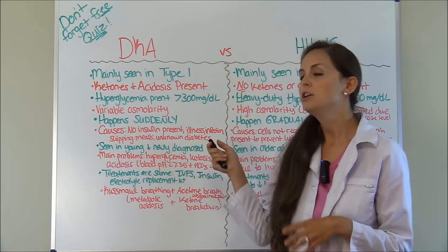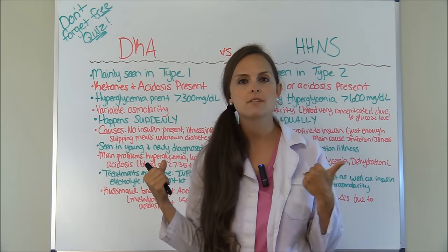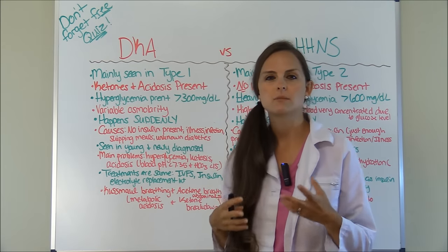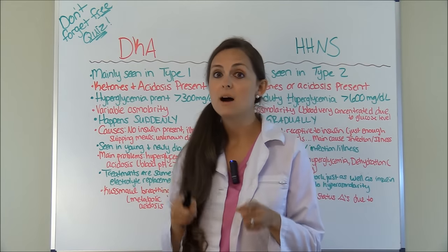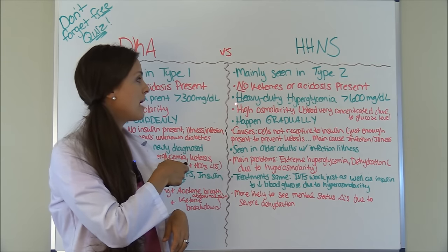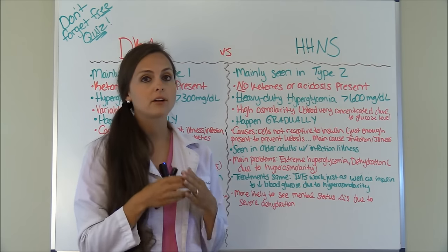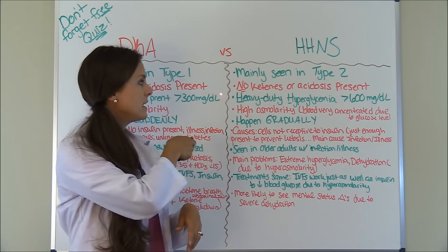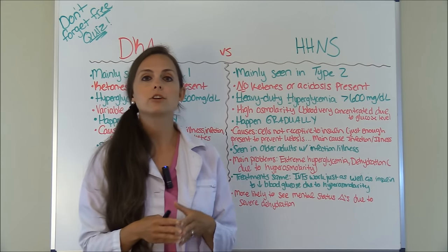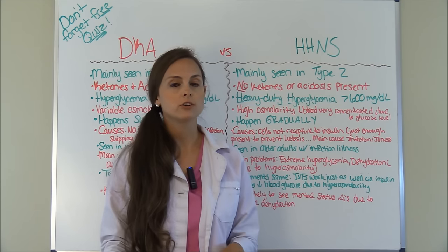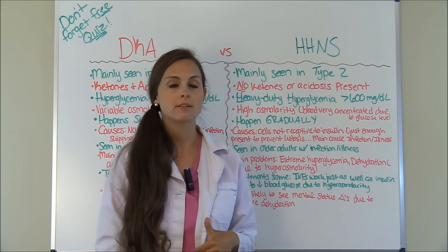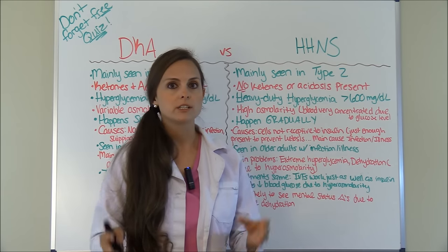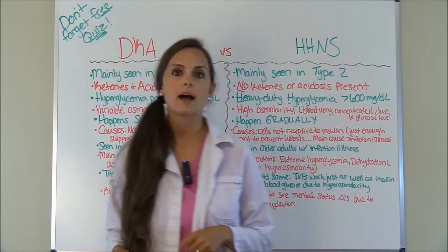In DKA you have hyperglycemia — you're going to have hyperglycemia in both conditions — but with DKA it's greater than 300 mg/dL. With HHNS, you are going to have heavy-duty hyperglycemia. Remember the mnemonic: the two H's in HHNS — HH — heavy-duty hyperglycemia. These sugars run greater than 600; you may see them not even registering on a monitor, requiring an IV draw, or they'll be four digits. These glucose levels are super high in these patients.